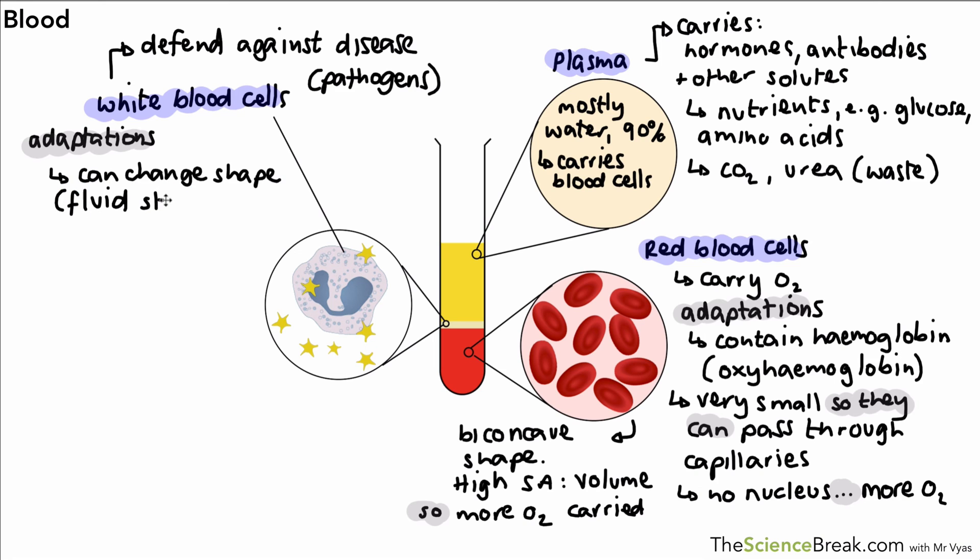They can squeeze out of blood capillaries and go and deal with any microbes that are causing a problem. One of the ways they do that is they engulf the microbes, so they kind of swallow them up. Having that fluid structure allows them to do that quite easily. So that's our white blood cells.